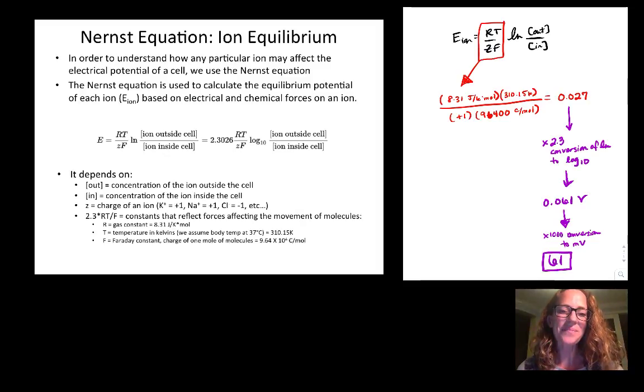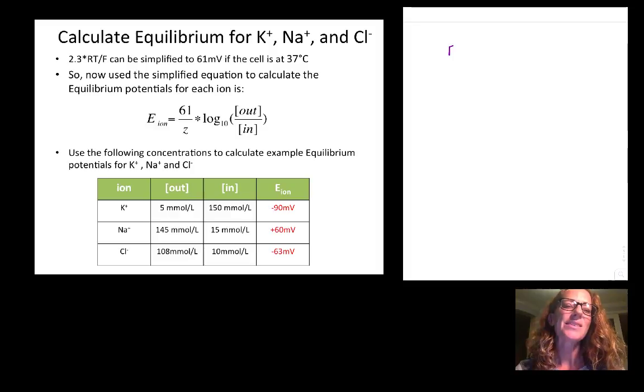Okay, did you get it? Let's check. So RT over F, if you're going to use the log base 10, can be simplified to 61 millivolts. That is if the cell is at 37 degrees.